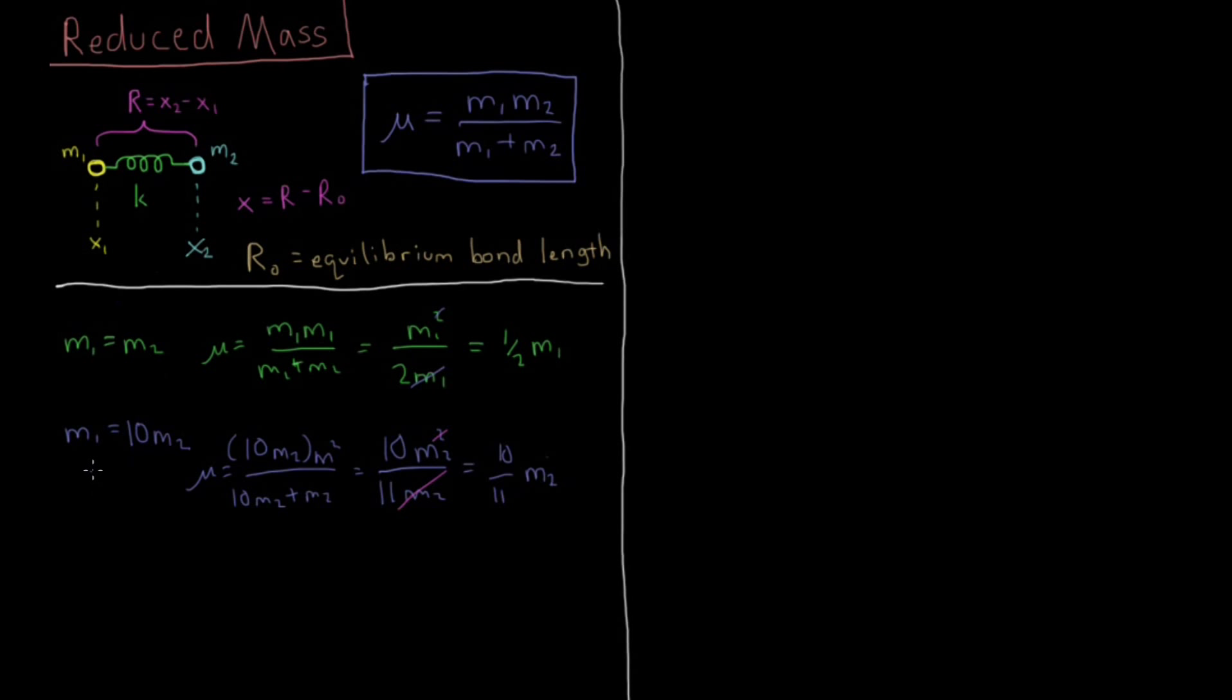So this would be analogous to something like, if we have a carbon and a hydrogen. Carbon has 12 atomic mass units, hydrogen has 1, so that's about 10. So in that situation the mass would be about 90 something percent the mass of the hydrogen. So you can see very quickly here that the mass of the lighter one very quickly starts to dominate.